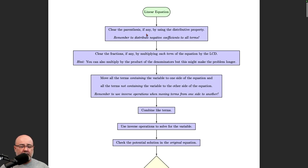Next, once we've taken care of parentheses or if there are none, we clear the fractions, again if there are any in the problem. We do this by multiplying each term, and it's italicized, it's very important that we're careful with this. We must multiply each term of the equation by the LCD, not just the ones that have fractions in them. Every single term has to get multiplied by the least common denominator.